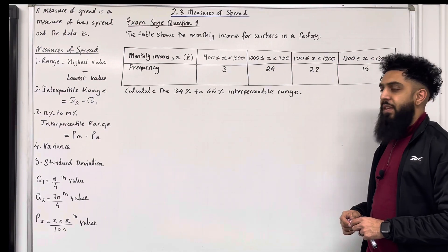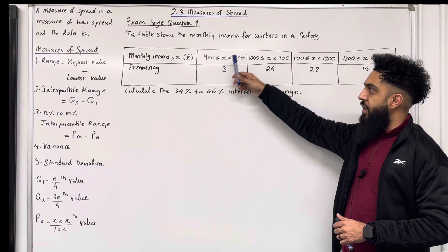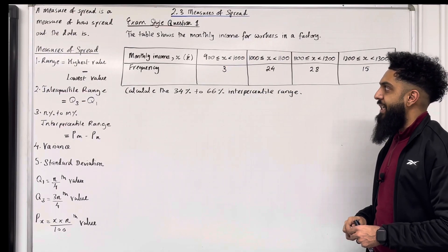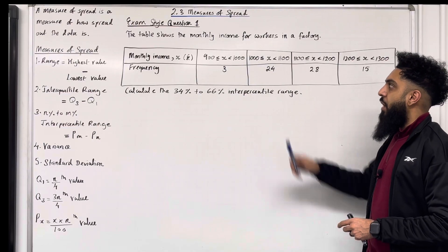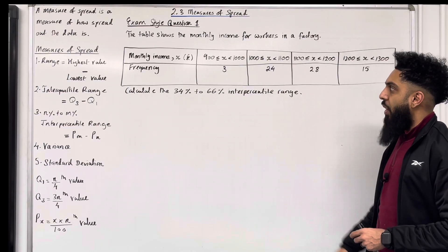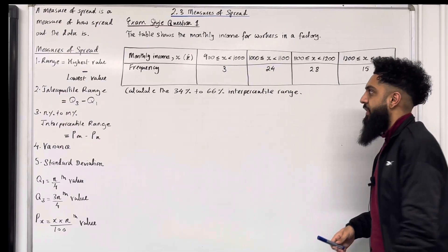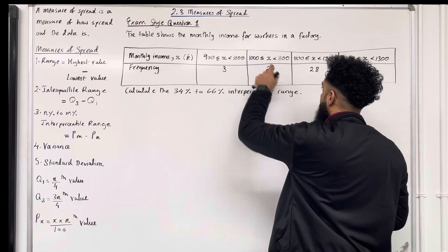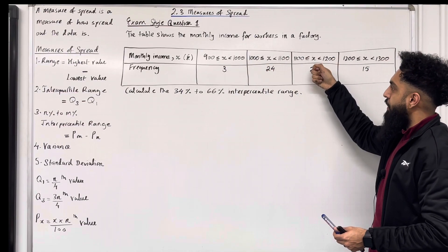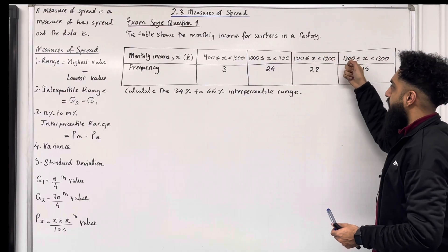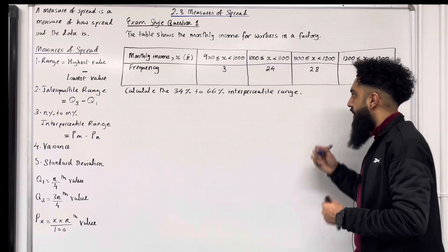Now let's check if the data has gaps. The first class interval: x is between 900 and 1000, where 900 is included. The second class interval: x is between 1000 and 1100, where 1000 is included. So going from the first to the second class interval there are no gaps, because of the equal sign at the beginning of each interval. This applies from the second to the third, and from the third to the fourth class interval. So the data does not have gaps.